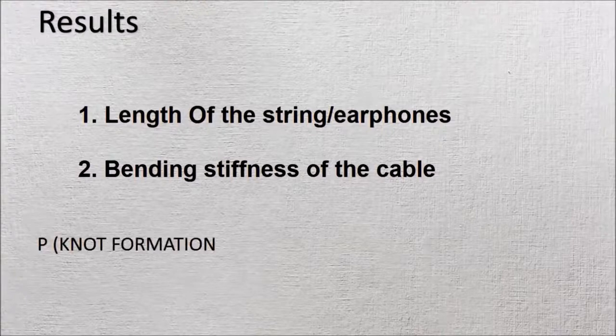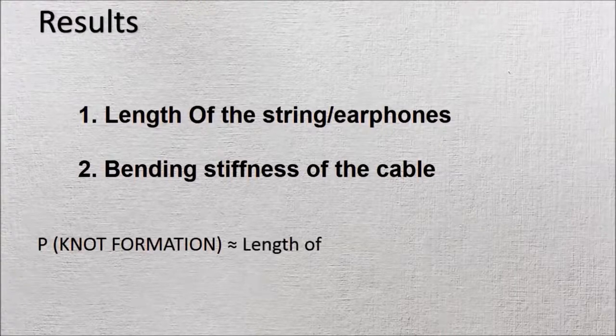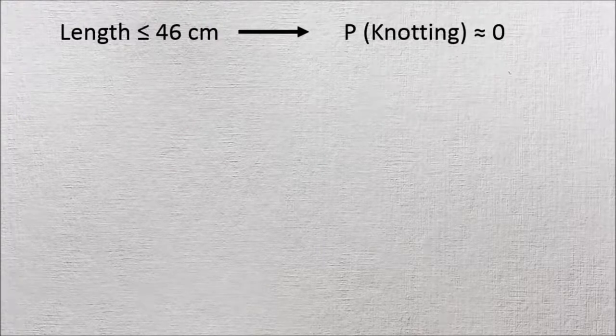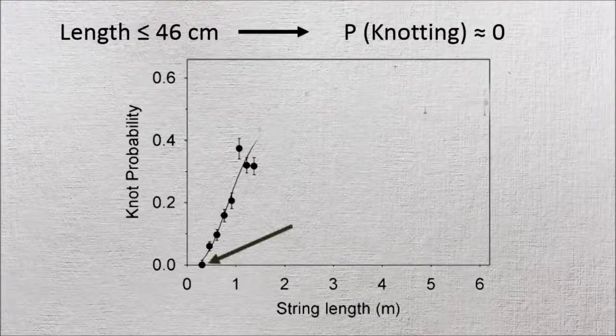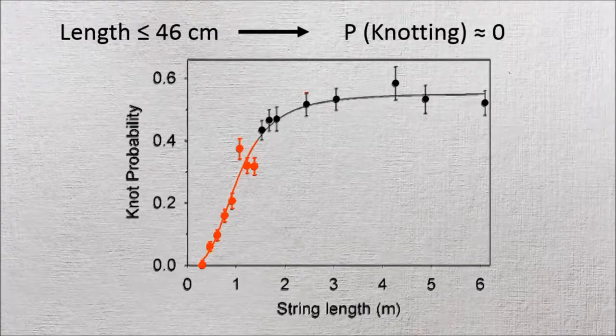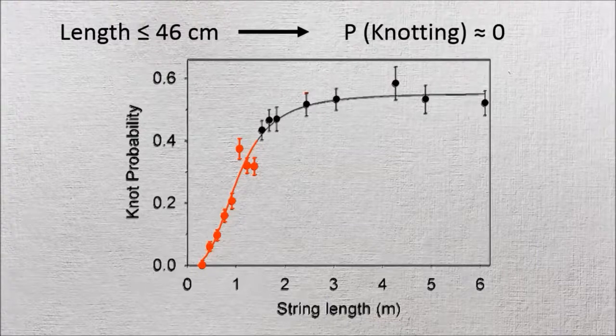The longer the string got, the greater the odds of knot formation became. A cord less than 46 cm in length will almost never tangle itself when sealed inside a rotating box. But between 46 cm and 150 cm, the probability of knot forming rises dramatically.